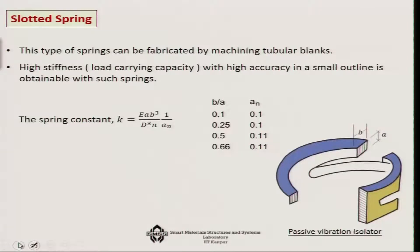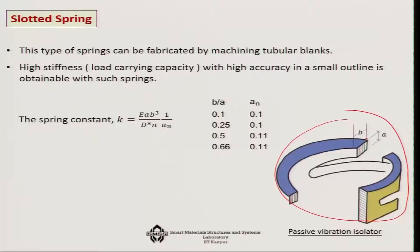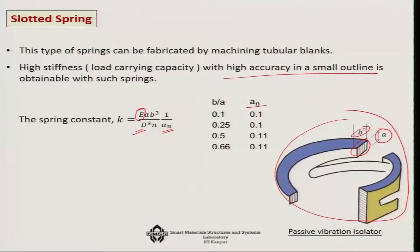Another variety of spring element used particularly for small linkages and joints is known as a slotted spring element. This also exploits the advantage of getting stiffness from Young's modulus of elasticity rather than shear modulus. To achieve this, the spring is slotted — made directly from blanks. With respect to the size ratio, you get a coefficient A_n, and from the coil diameter and other parameters you can calculate the spring constant, which is directly proportional to the modulus of elasticity. It has high accuracy in a small outline size.